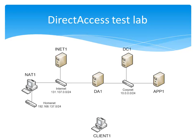DC1 is acting as an intranet domain controller and DNS server. App1 is a general application server. DA1 is our Direct Access server. INET1 is an intranet web and DNS server. NAT1 is providing network address translation between the internet and home net subnets. Client1 is our Direct Access client that connects to the various subnets to show Direct Access client functionality.